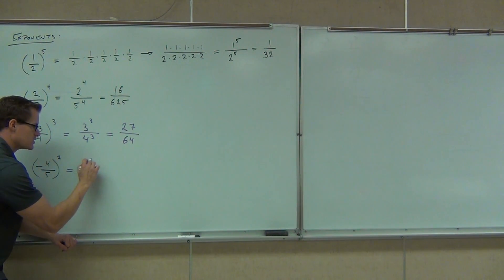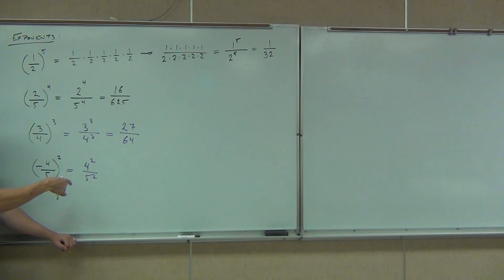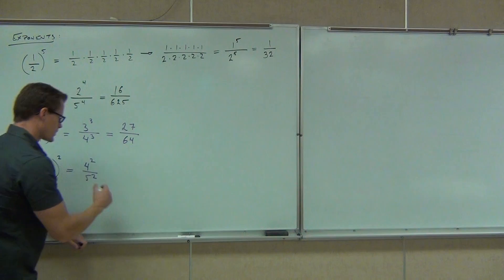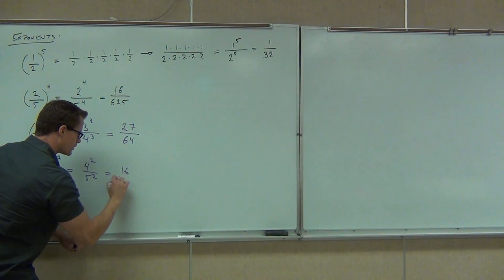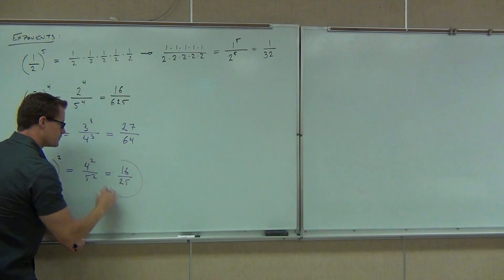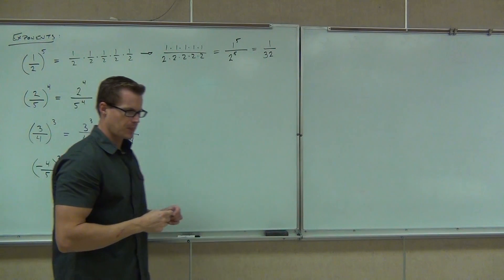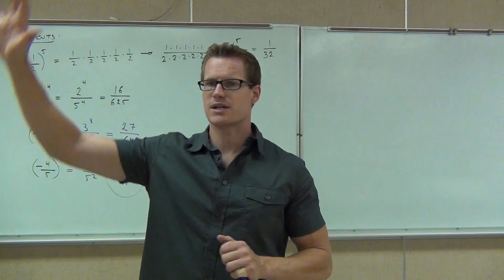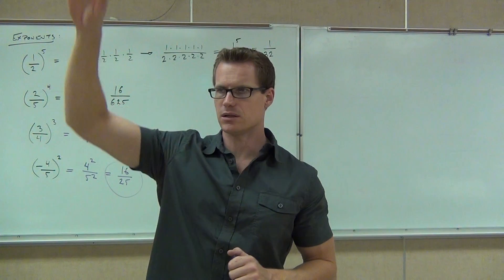So we know we're going to get a positive. Now we just have to do four squared over five squared. How much is four squared? Sixteen. Over five squared — twenty-five. How many of you feel okay with these exponents? Good.